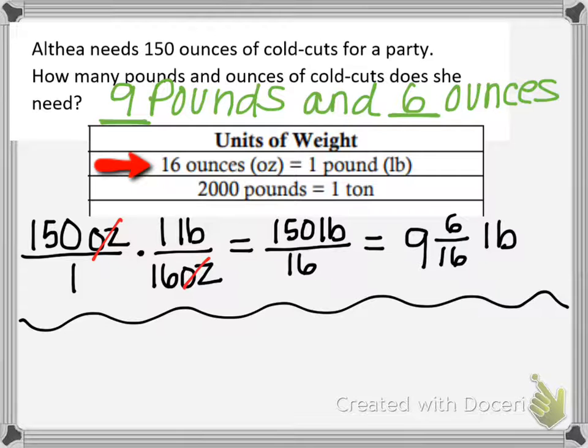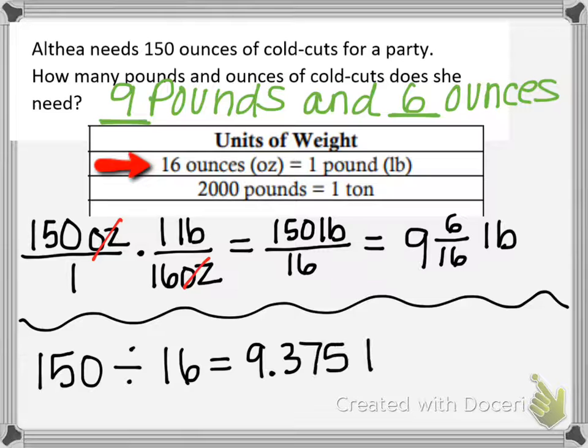The other way to do this problem is just to do the division and get the decimal. So 150 divided by 16 is 9.375. But that's all pounds, that's 9.375 pounds. We still need to figure out that 0.375, what that means in ounces. So the 9 tells me I have 9 whole pounds.